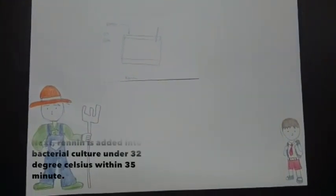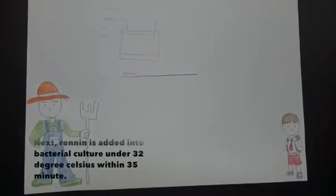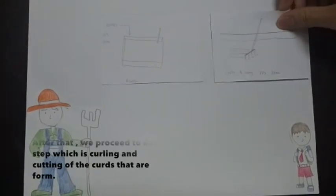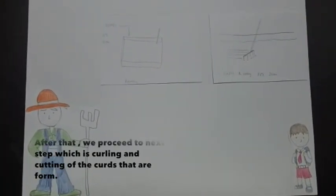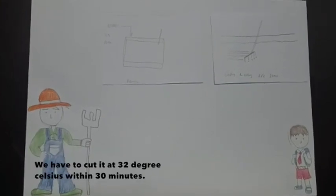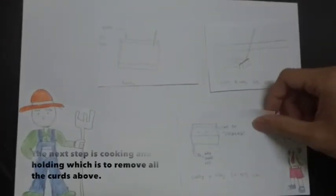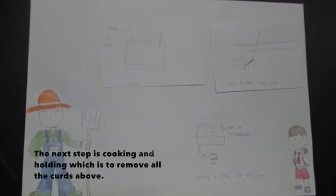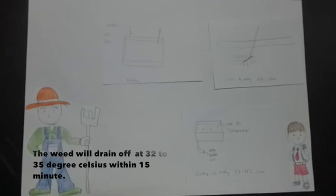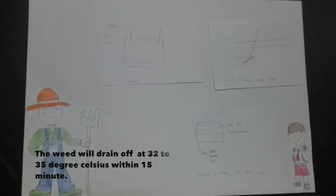Next, renin is added into the bacterial culture under 32 degrees Celsius within 35 minutes. After that, we proceed to the next step which is curdling and cutting off the curds that are formed. We have to cut it at 32 degrees Celsius within 30 minutes. The next step is cooking and holding which is to remove the curds. The whey will drain off at 32 to 35 degrees Celsius within 15 minutes.